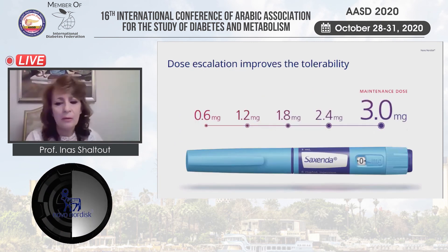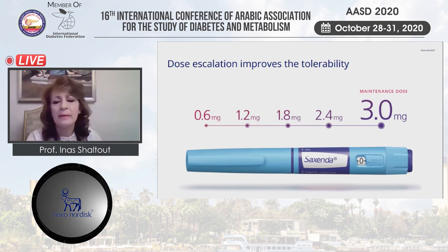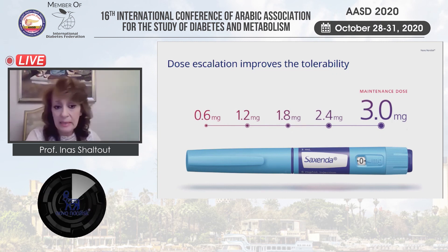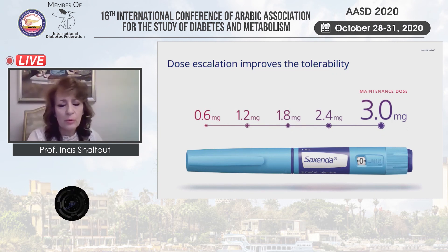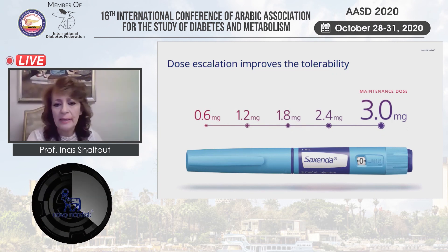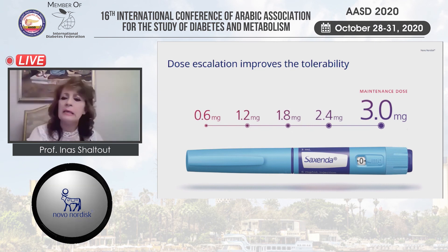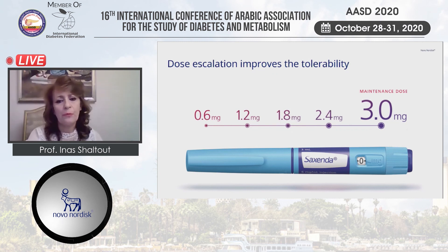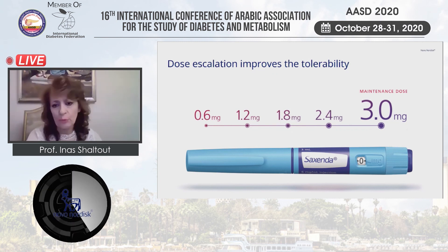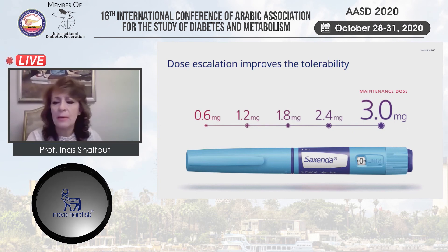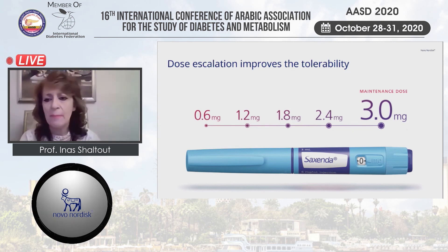The liraglutide pen uses the same dose escalation schedule: 0.6 mg after week 1, 1.2 mg, 1.8 mg, 2.4 mg, and ending with the therapeutic dose for obesity which is 3 mg.